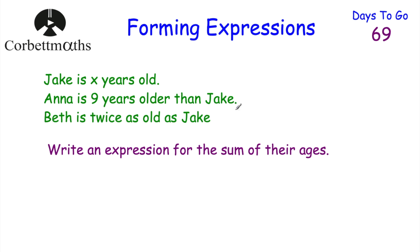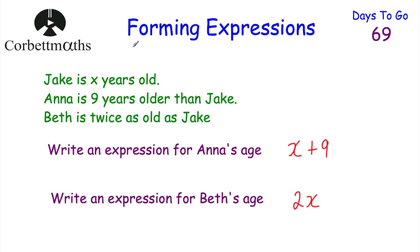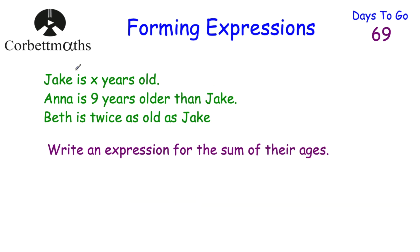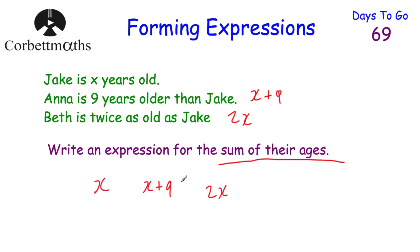The next part uses the same information and asks us to write an expression for the sum of their ages. Jake was X, Anna was X plus 9, and Beth was 2X. We just need to add these up: X plus (X plus 9) plus 2X. Adding the X terms: X plus X is 2X, plus another 2X gives 4X. We still have the plus 9, so the expression for the sum of their ages is 4X plus 9.